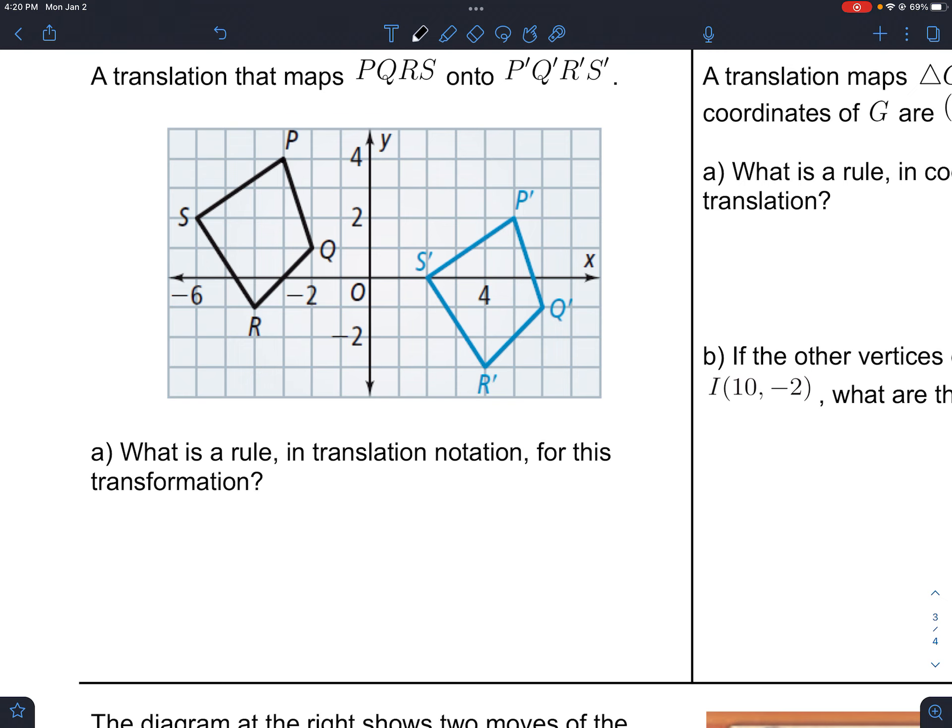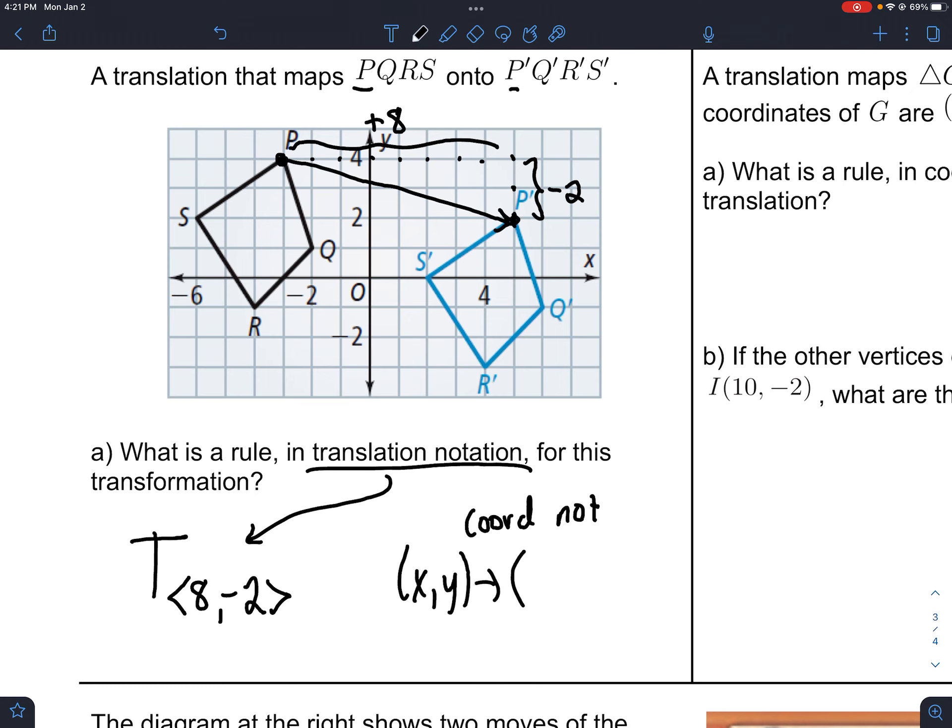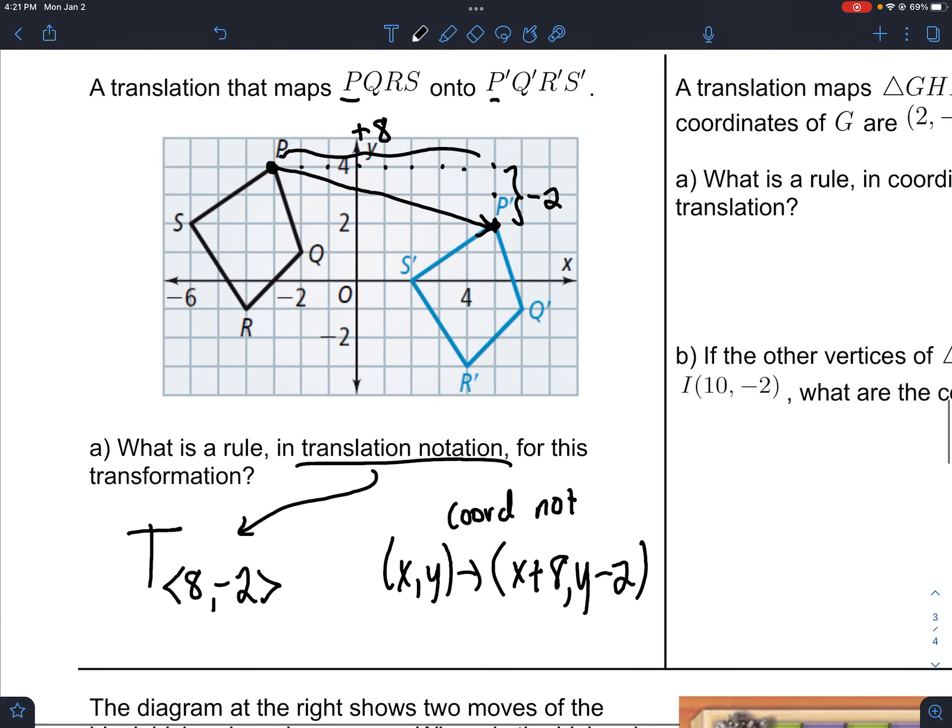If we had a picture of a translation, notice that P goes to P prime. I know all the points are going to be moved the same way. So if I count 1, 2, 3, 4, 5, 6, 7, 8, and 1, 2, I can write down my big T notation, which is I'm going to move 8 units and then go down 2. Or, the coordinate notation is x, y becomes x plus 8 and y minus 2.